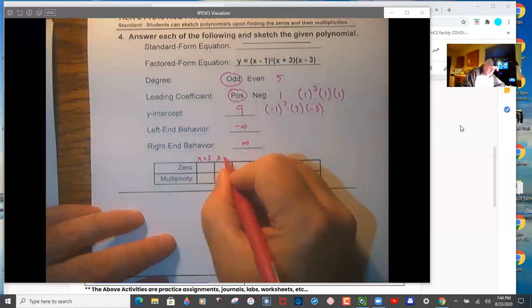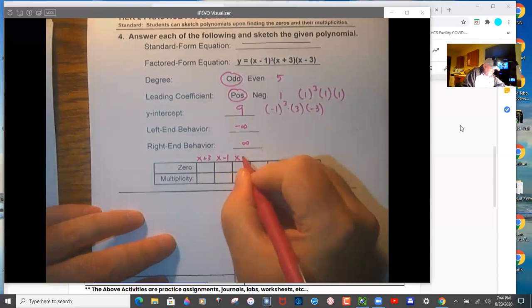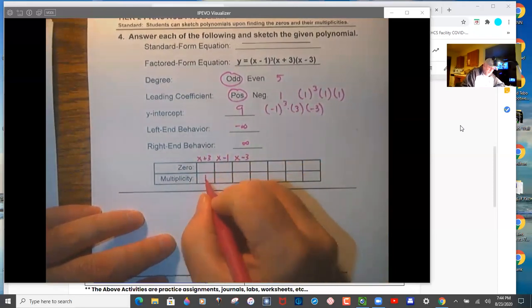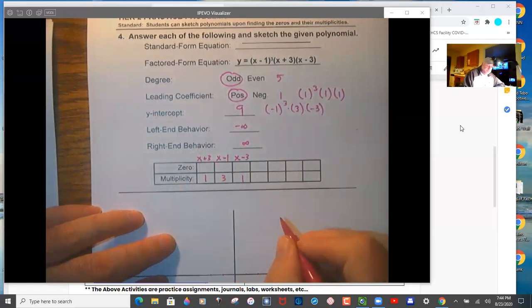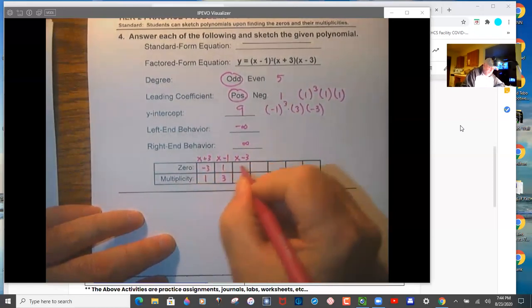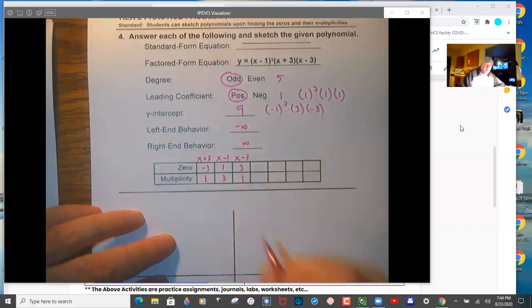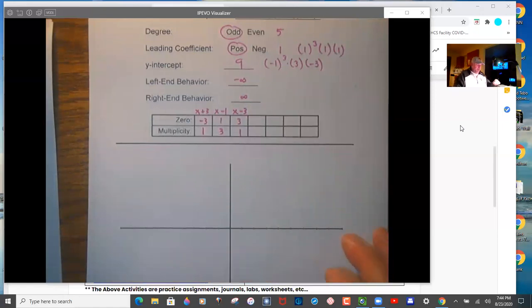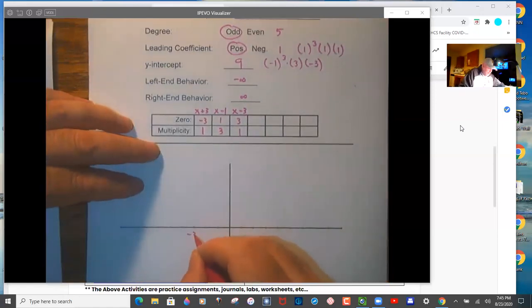So here are your factors. And then the multiplicity is the powers on each of these. So one, three, and one. Again, the order that you write them in the table doesn't matter. I like to write them left to right as far as like how you'd place them on the x-axis.